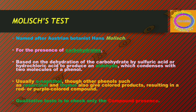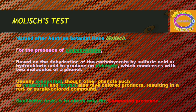The Molisch test is named after Austrian botanist Hans Molisch, who invented this test for the presence of carbohydrates. It is based on the dehydration of carbohydrates by sulfuric acid or hydrochloric acid to produce an aldehyde. Hydrochloric acid can be used as an alternative, following the same principle of hydronium ion formation. Usually alpha-naphthol is used, though other phenols such as resorcinol and thymol also give colored products.